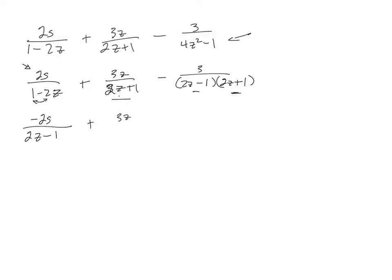Plus 3z over 2z plus one minus 3 over 2z minus one 2z plus one. Common denominator is going to be both of those. So this first one I'm going to need to multiply top and bottom by 2z plus one. That's a z, I'm not sure where I got an s from. 2z plus one.